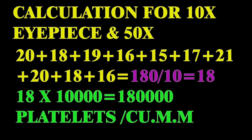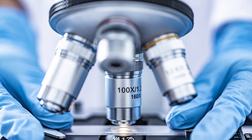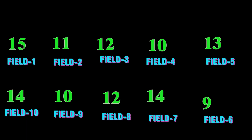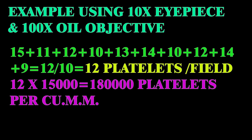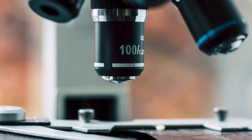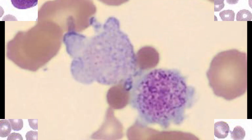For example, if counting 18 platelets per field, the count is 180,000 platelets per cubic millimeter. If using 10x eyepiece and 100x oil immersion, the calculation is number of platelets multiplied by 15,000. For example, if you get an average of 12 platelets in 10 fields, then 12 × 15,000 = 180,000 platelets per cubic millimeter. The preferred magnification is 10x eyepiece and 100x oil immersion because platelets are clearly seen, chances of counting dust particles are less, and the size and morphology of the platelets are seen clearly.